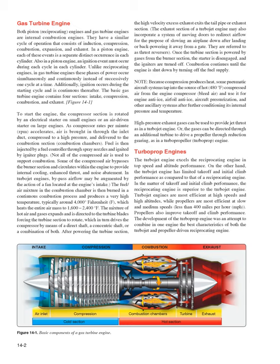After powering the turbine section, the high-velocity excess exhaust exits the tailpipe or exhaust section. The exhaust section of a turbojet engine may also incorporate a system of moving doors to redirect airflow for the purpose of slowing an airplane down after landing or back-powering it away from a gate — referred to as thrust reversers. Once the turbine section is powered by gases from the burner section, the starter is disengaged and the igniters are turned off. Combustion continues until the engine is shut down by turning off the fuel supply.